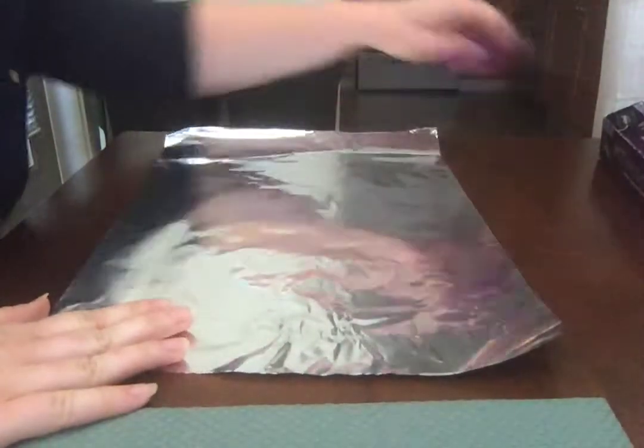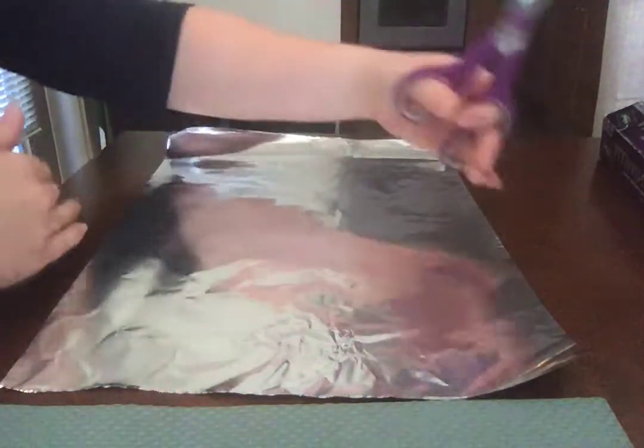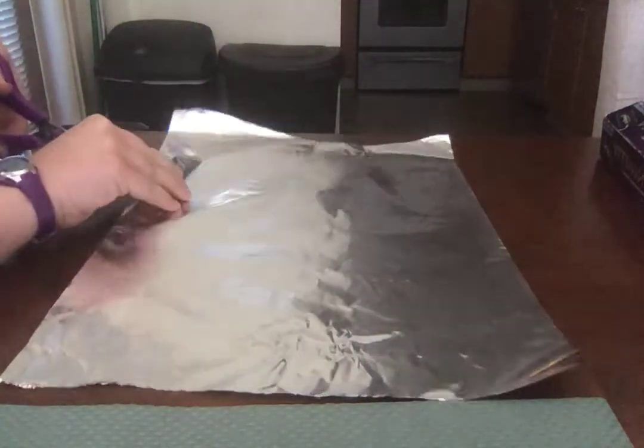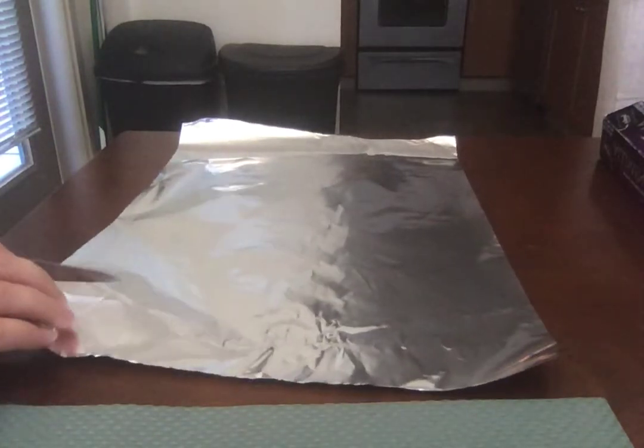So you want your tin foil to be relatively equal in length on both sides. I'm going to cut this just a little bit, make it a little more square.